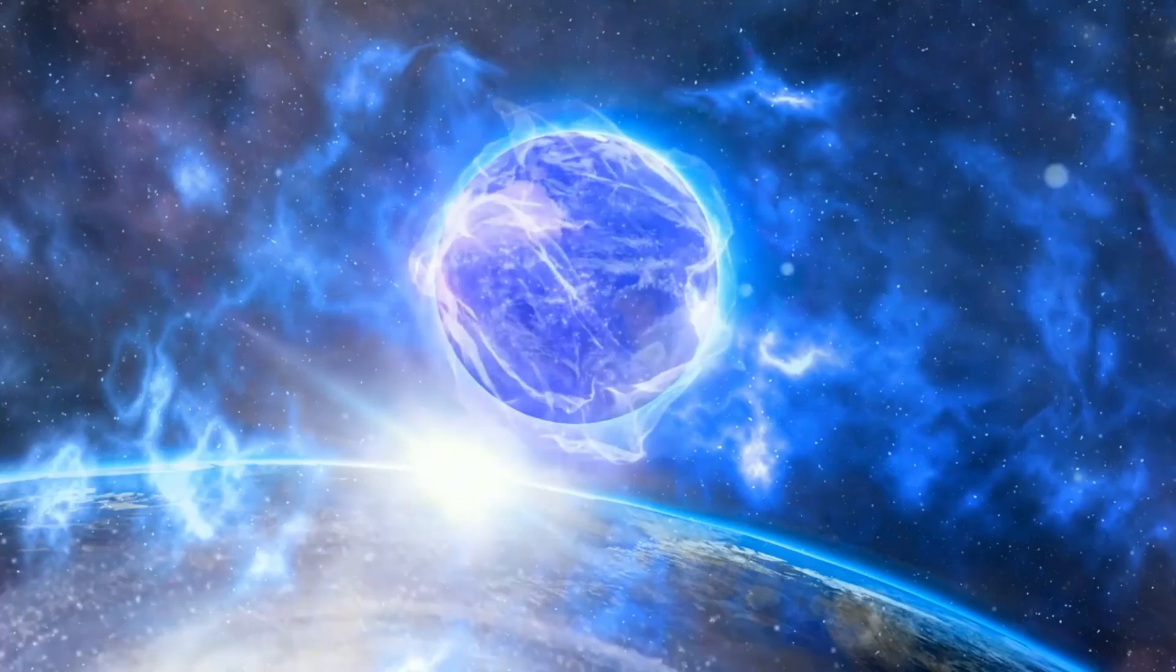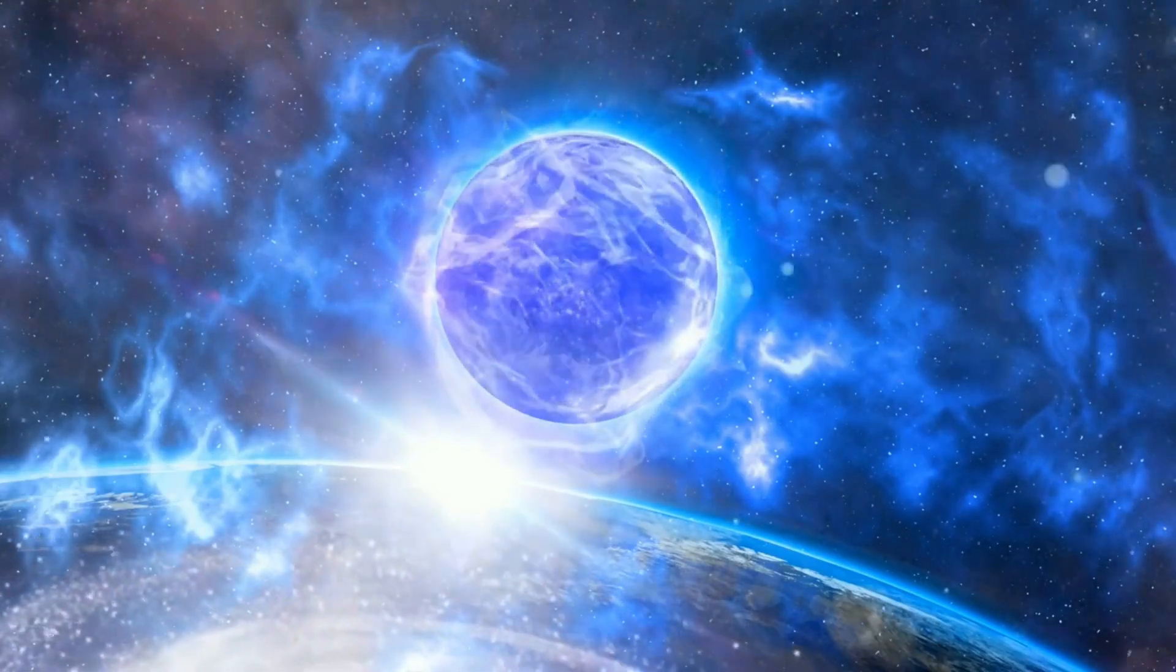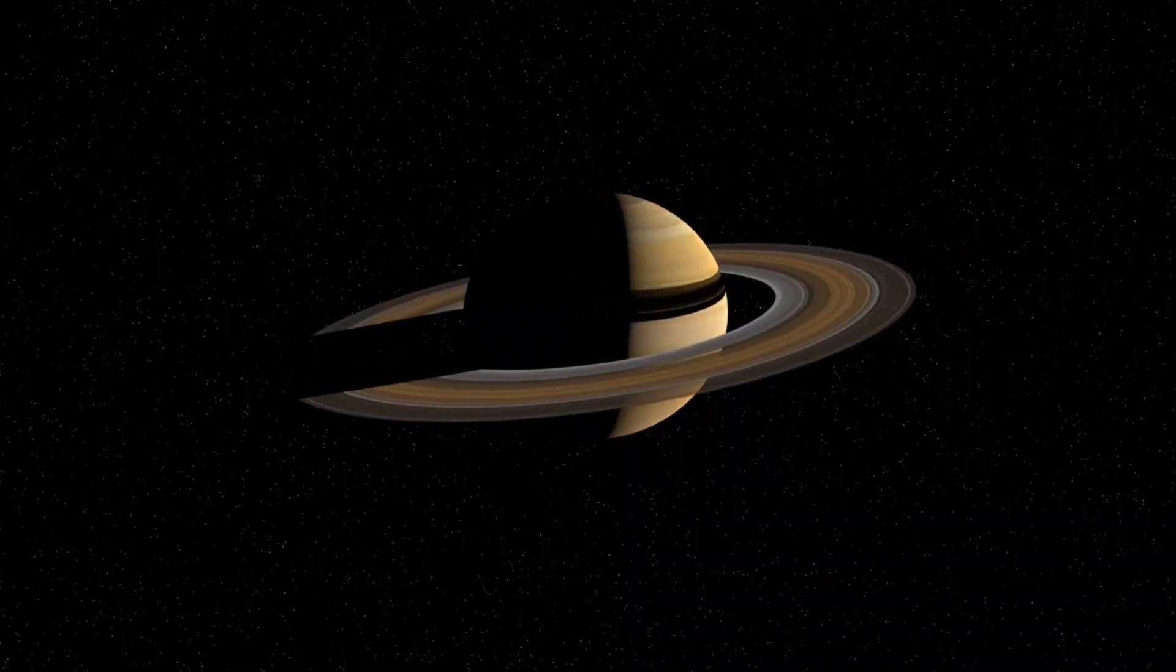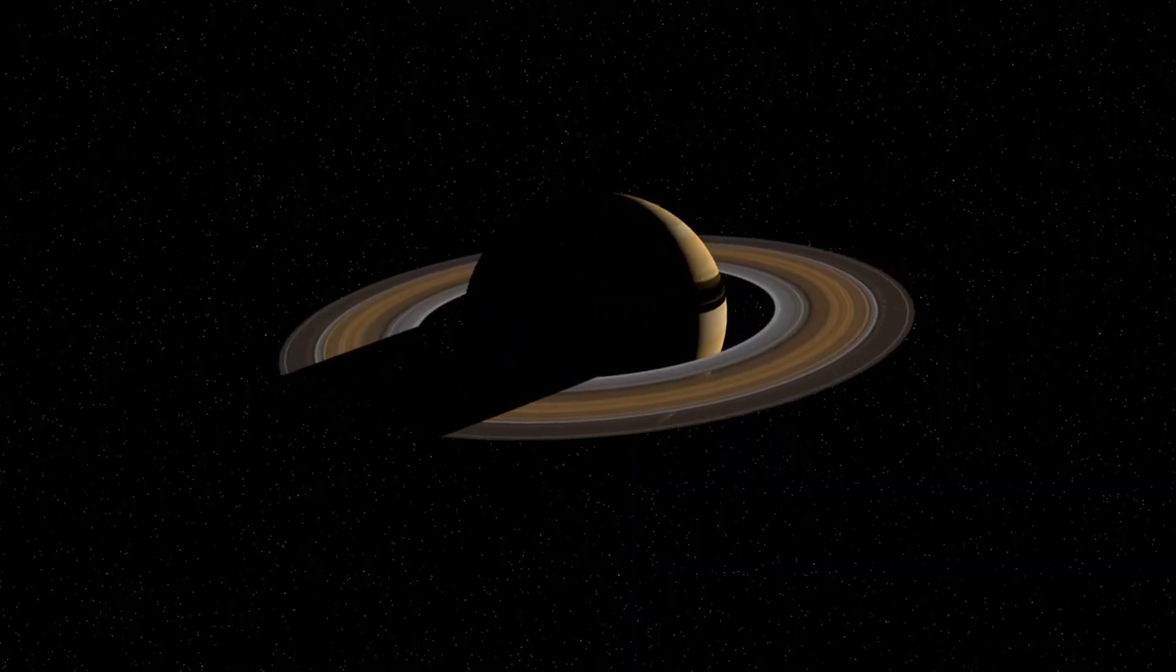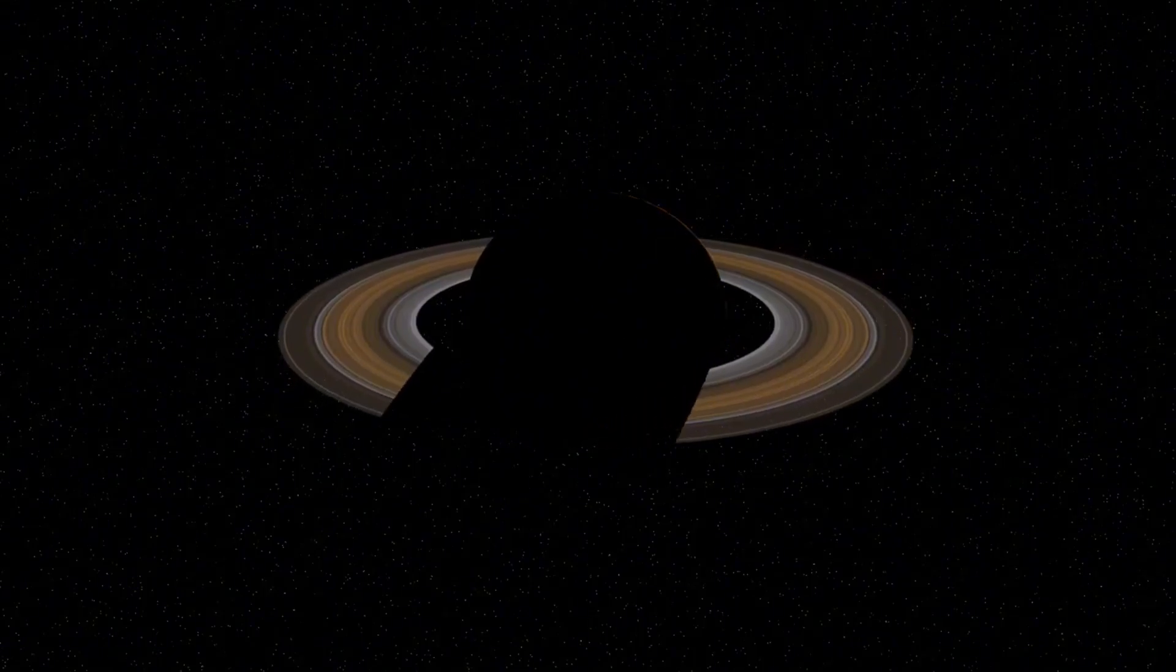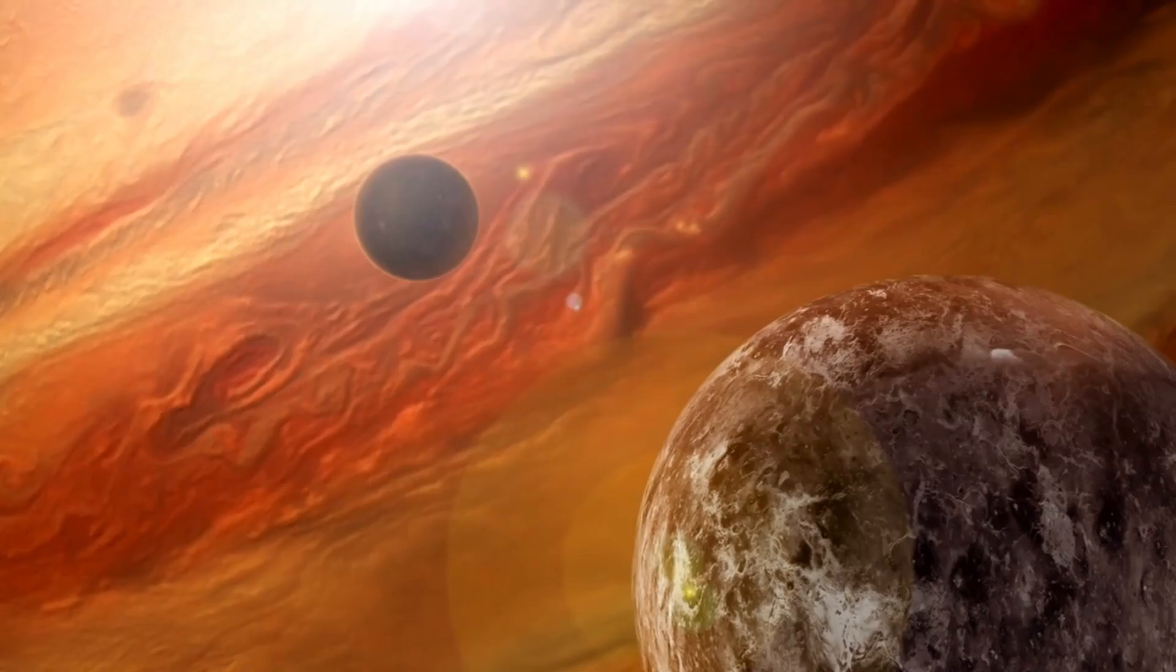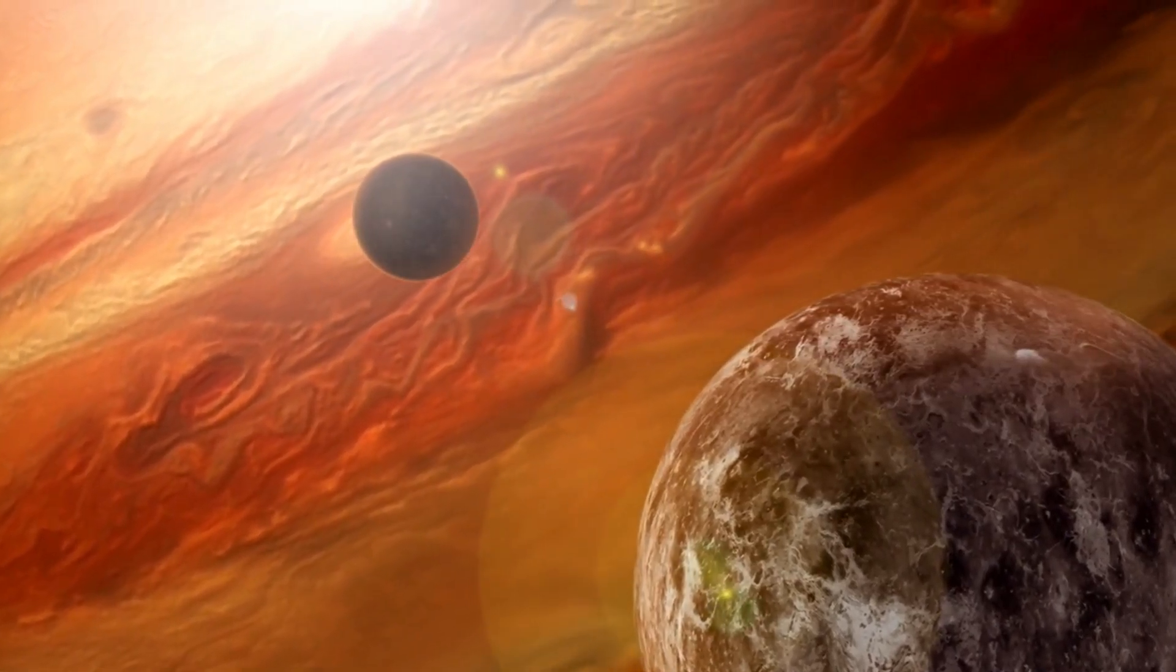Proxima b's mass is estimated to be about 1.07 times that of Earth. Remarkably, it completes an orbit around its star in only 11.2 Earth days, compared to our 365.25 day orbit. This offers an idea of the size of its star, Proxima Centauri.